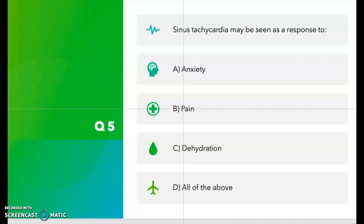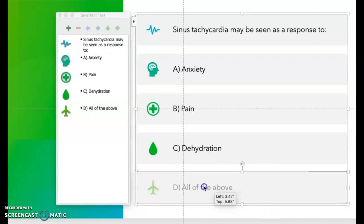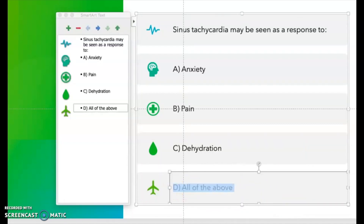These questions can be found on your RN and LPN exams, EKG courses, phlebotomy courses, and the ACLS course. The correct answer is D — all of the above. Anxiety, pain, and dehydration can all cause sinus tachycardia. I'm going to bold it.